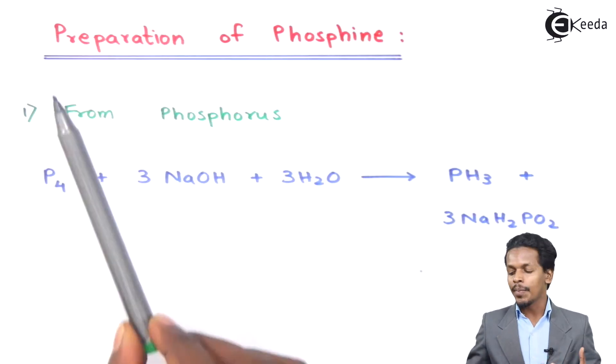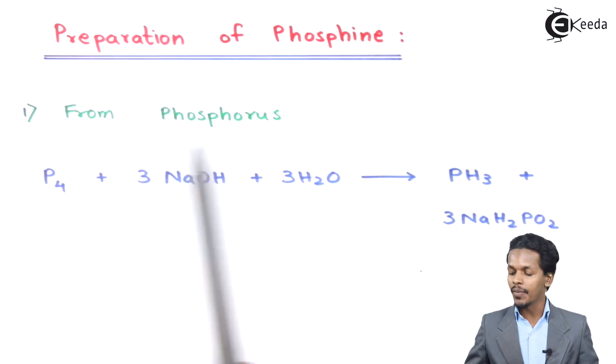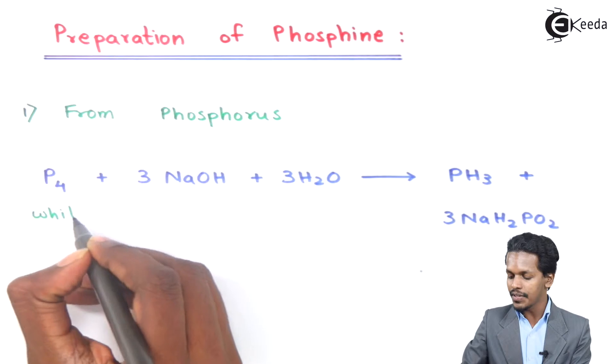In this topic, I am going to talk about the preparation of phosphine. Starting with the first method, we can prepare phosphine from phosphorus. In this case, P4, and especially we are taking white phosphorus.